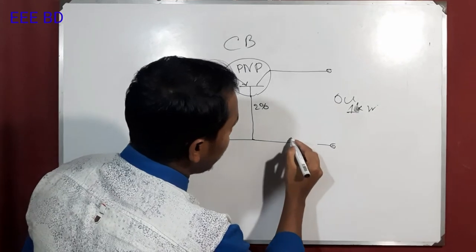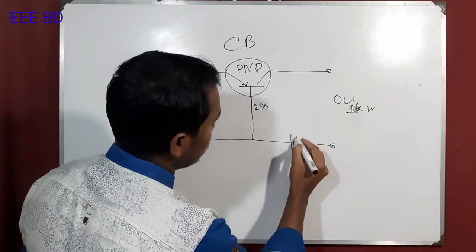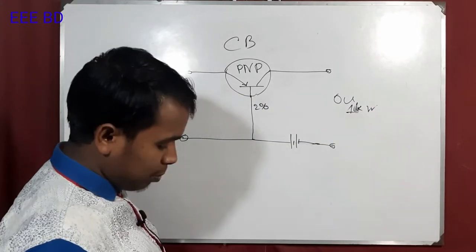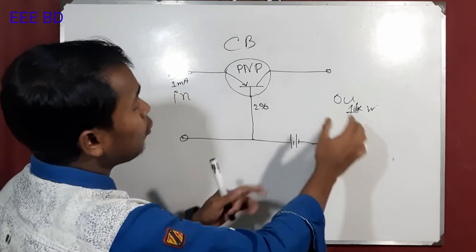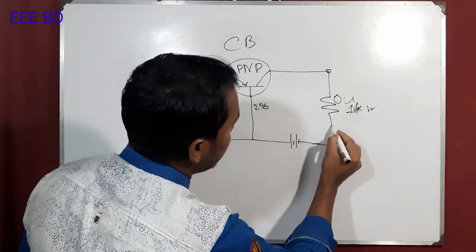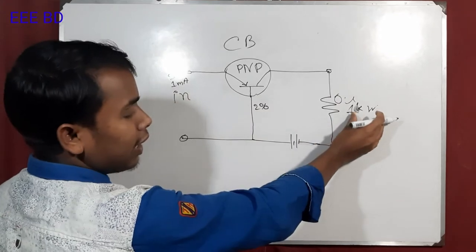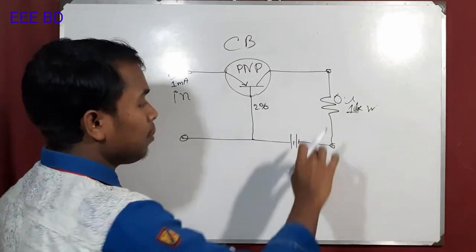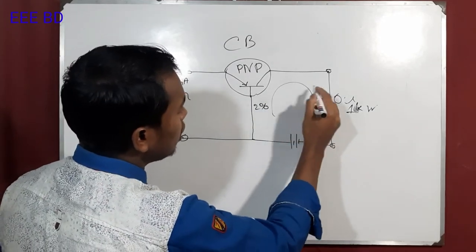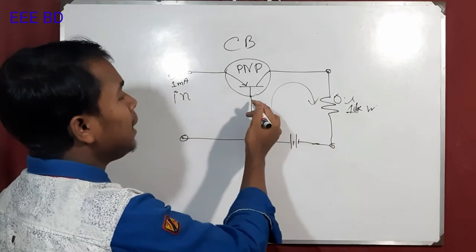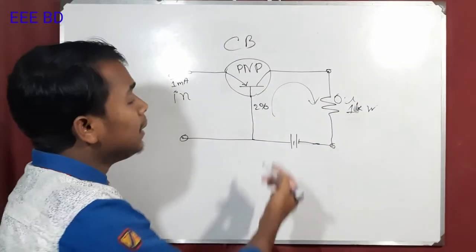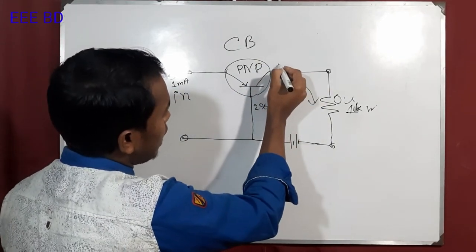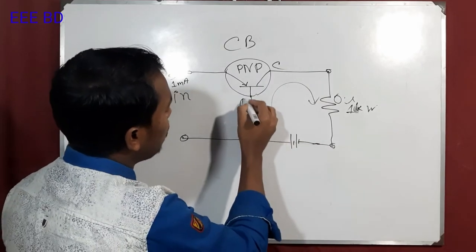We can add the battery to the higher battery. We can add the current flow. The current flow is used. When the signal is open, the collector will be the same as the emitter.